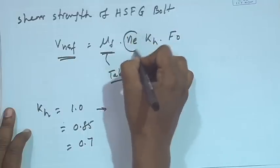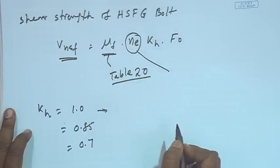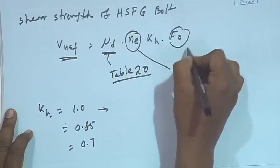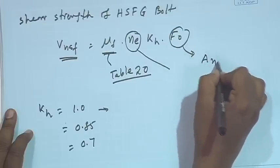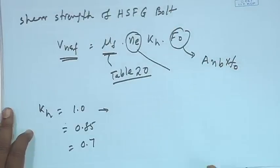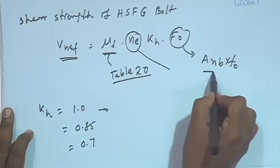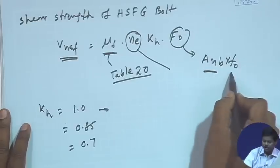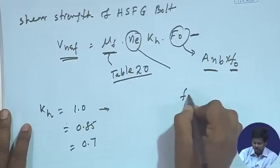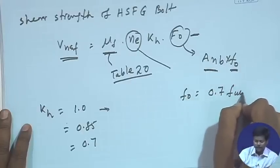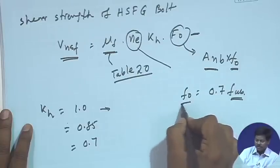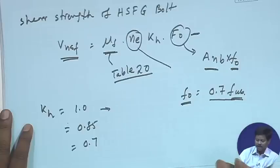The parameter ne is the number of effective interfaces offering frictional resistance to slip. f0 is the proof load, calculated as Anb × f0 (small f0), where Anb is the net area of bolt. Here f0 (small) is the proof stress, which can be calculated as 0.7 × Fuv, where Fuv is the ultimate tensile stress of the bolt.